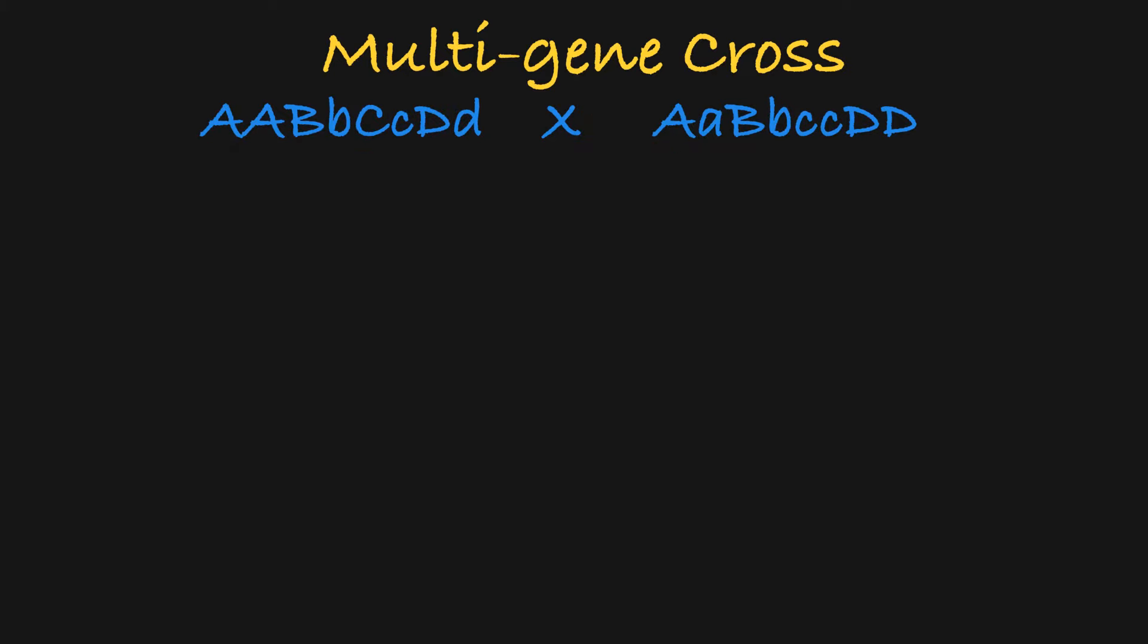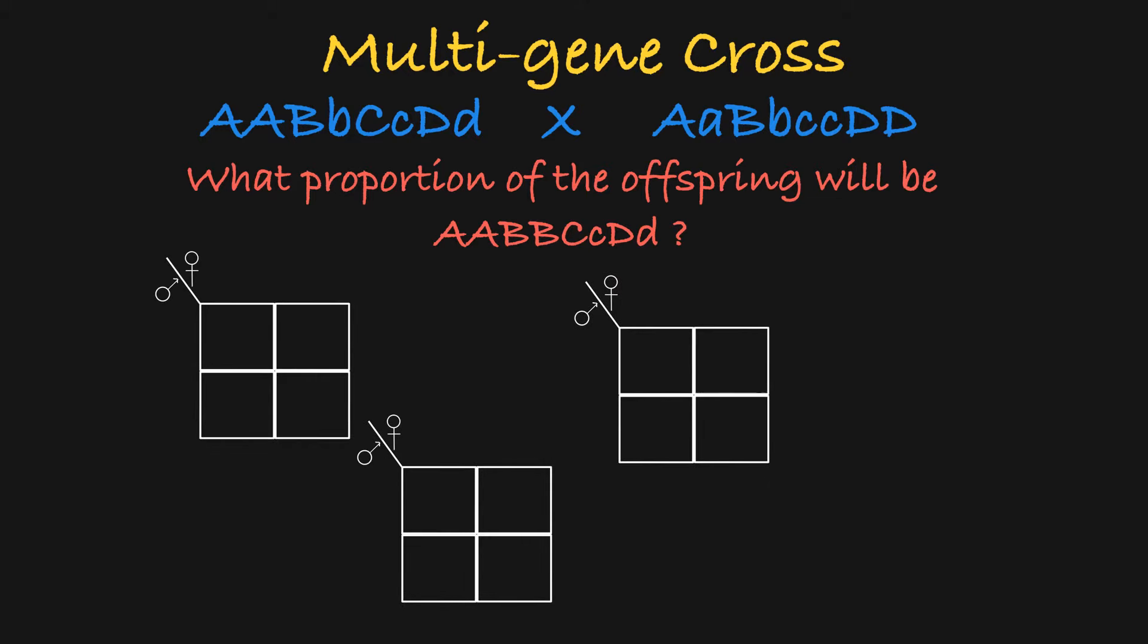So, you cross these two parents and you want to know what proportion of their offspring will have this genotype. How do we solve this problem? The easiest way to do this is to break it down into four independent problems. You can find the overall probability of seeing offspring with this genotype by multiplying together the probabilities of each of these individual genotypes occurring in the offspring.